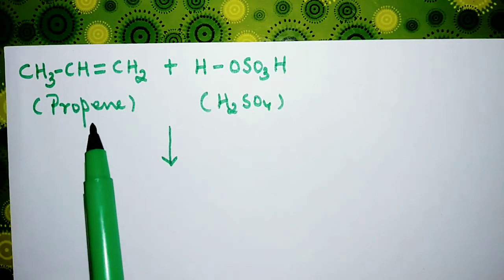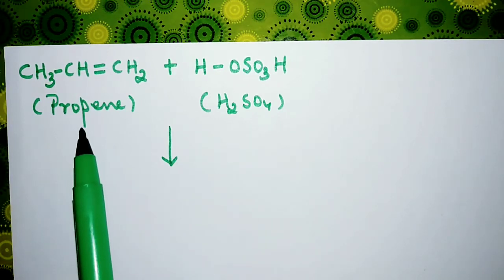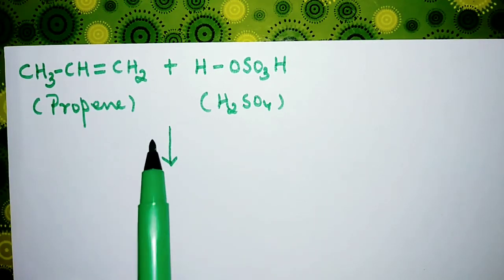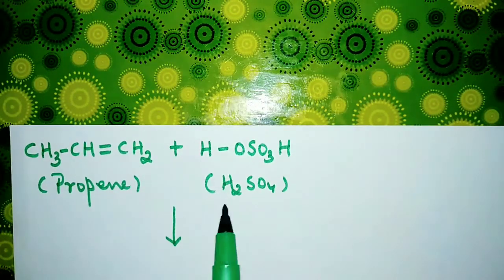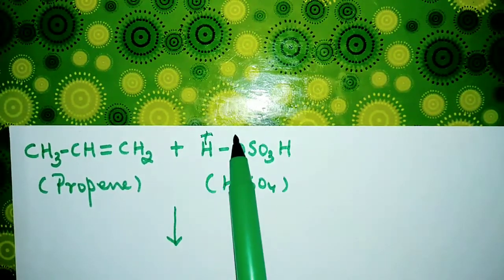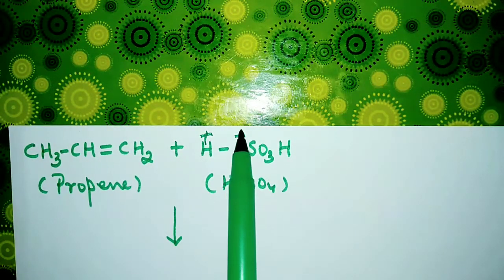What happens when propene is treated with sulfuric acid? This propene is an unsymmetrical alkene, so we have to follow Markovnikov's rule. Now look here - this part is positive, this part is negative. According to Markovnikov's rule, the negative part...